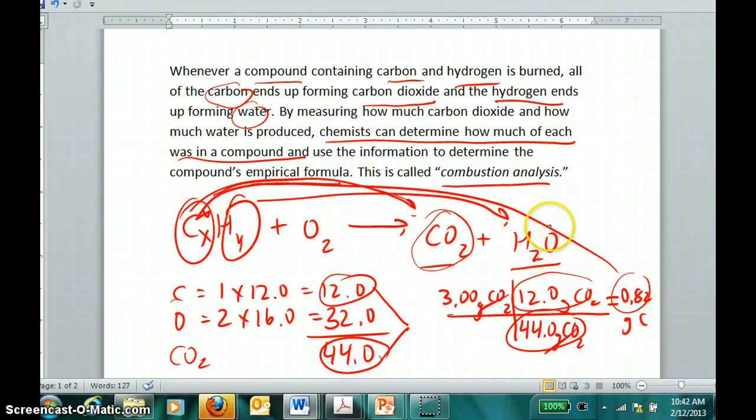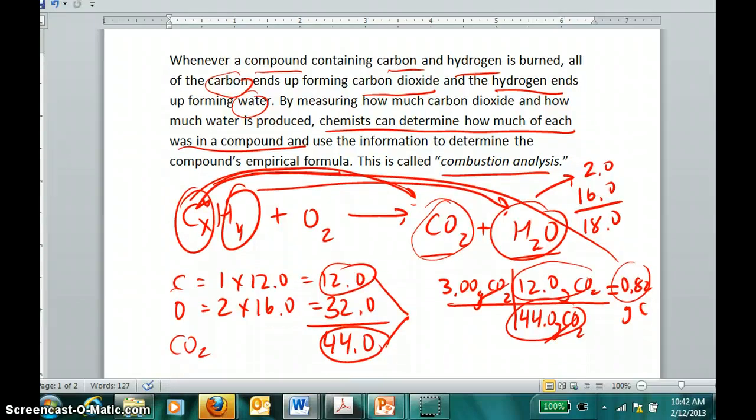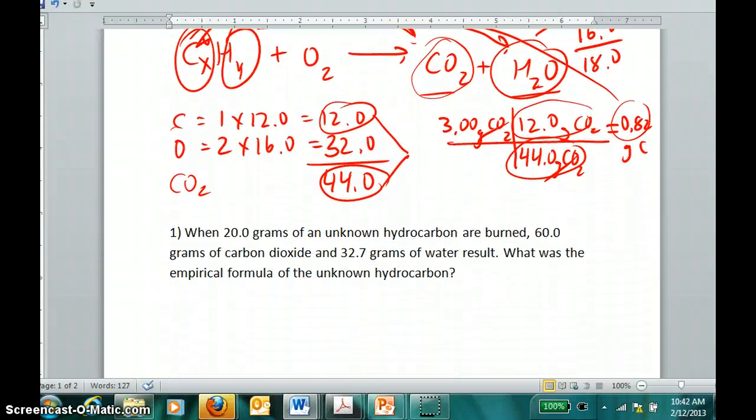I can do the same thing for the hydrogen in water, because hydrogen makes up 2/18ths of the mass of water. If I knew the mass of water that was produced, I'd simply find 2/18ths of that mass and know how much hydrogen there was. From that point we could proceed to calculate the empirical formula.